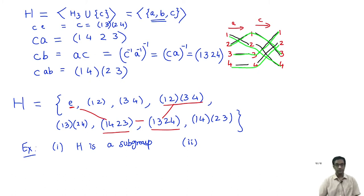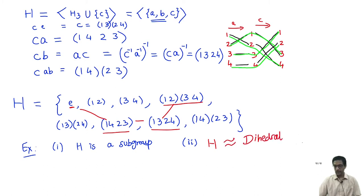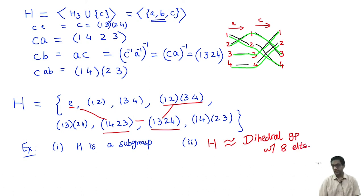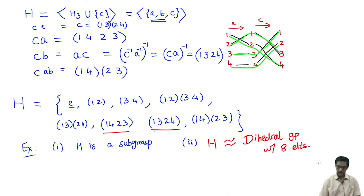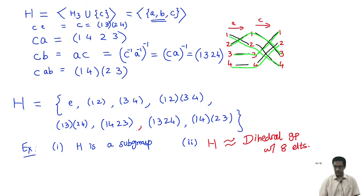This should remind you of the dihedral group. The second exercise is to show that H is actually isomorphic to the dihedral group D4 with 8 elements — D4 being the dihedral group on 8 elements. The interesting thing we have seen is that the 2-Sylow subgroup of S4 has 8 elements and is isomorphic to D4.